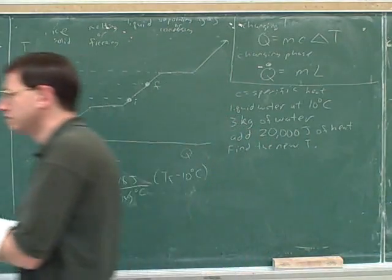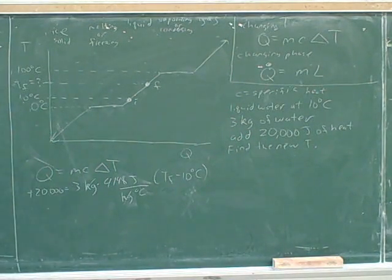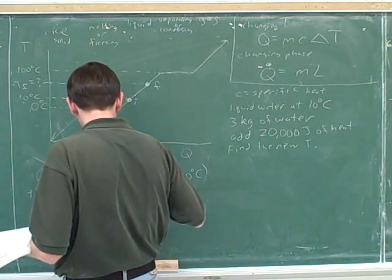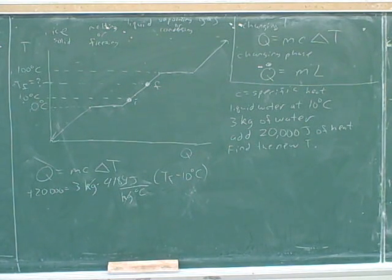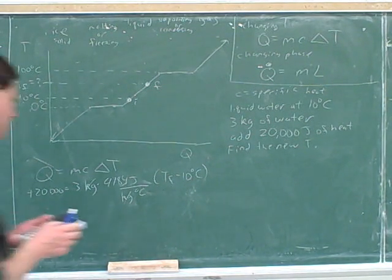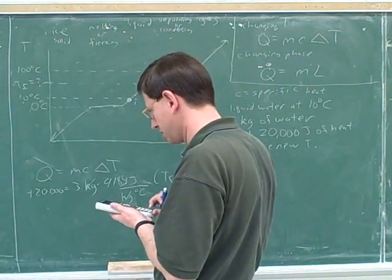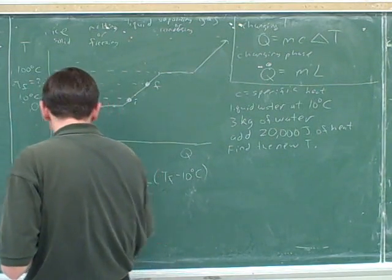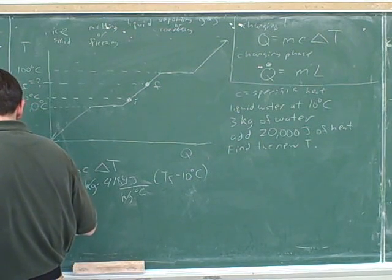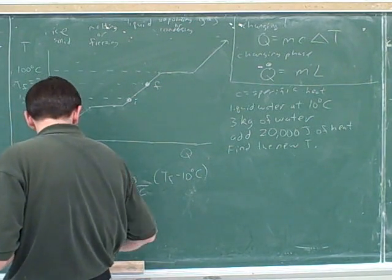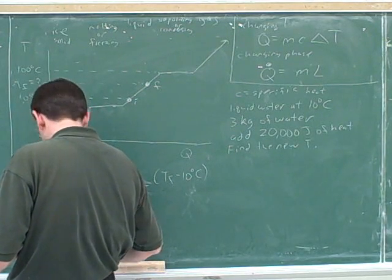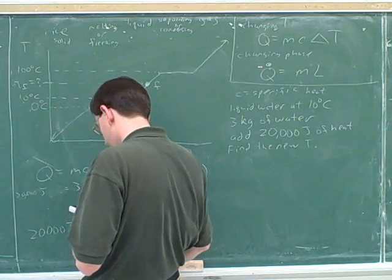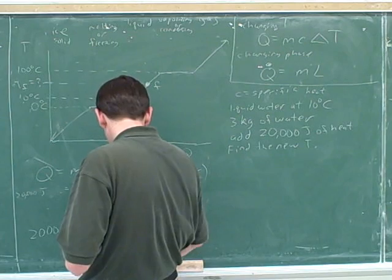Oh yeah, I wrote down the wrong thing on the board. On the right and left-hand side, I guess I should have written joules. 20,000 joules. So this is joules over here. And then on the right-hand side, we got 12,552 joules.